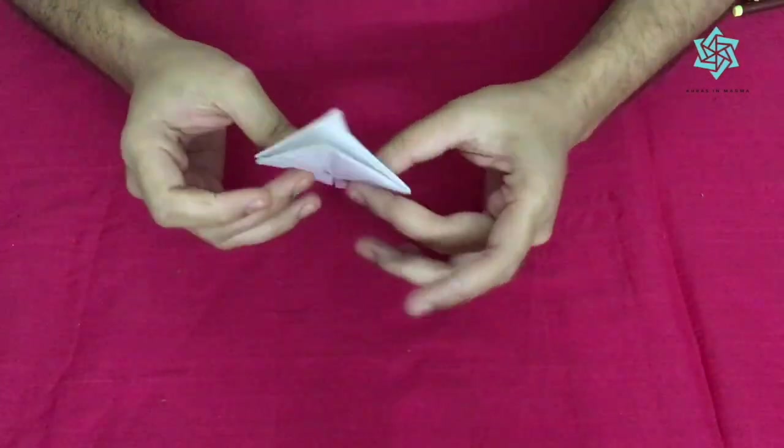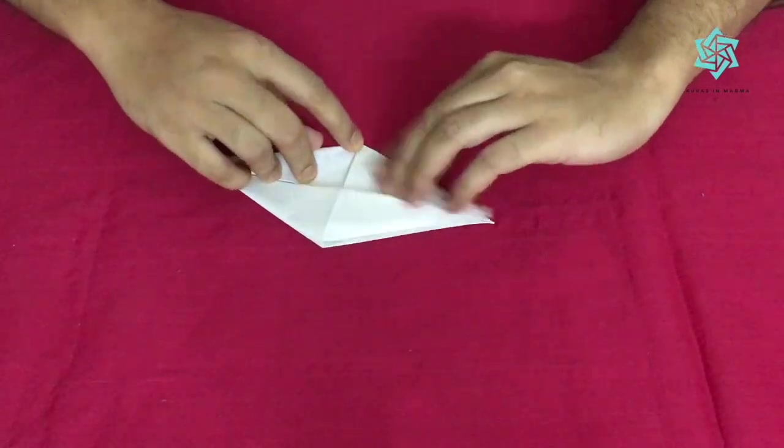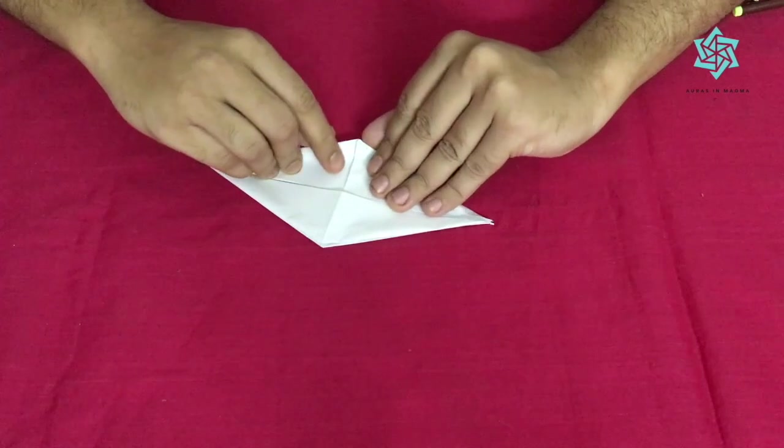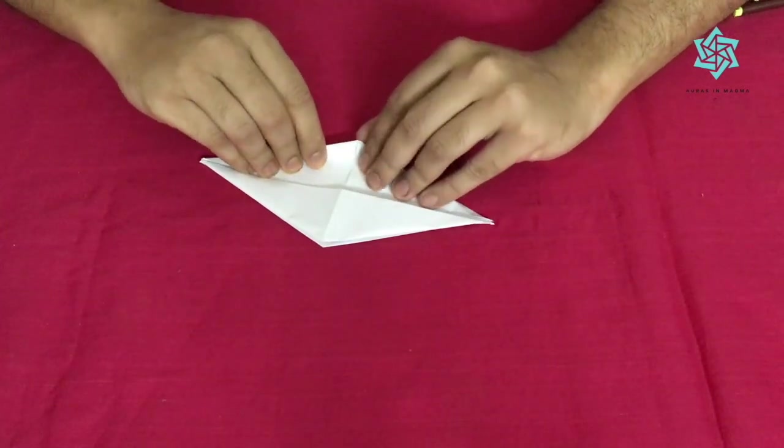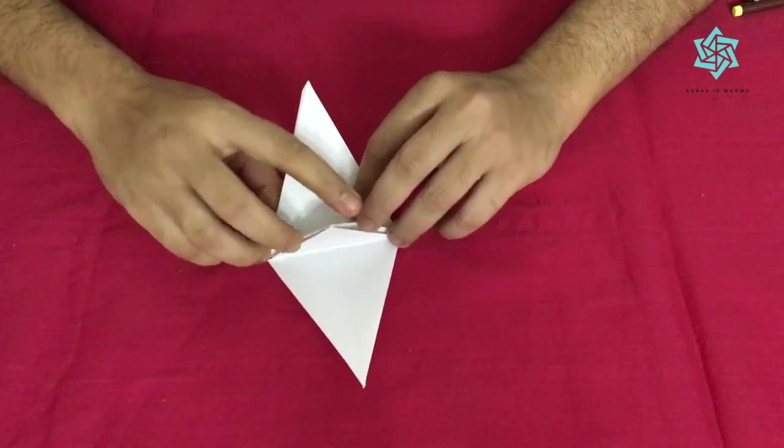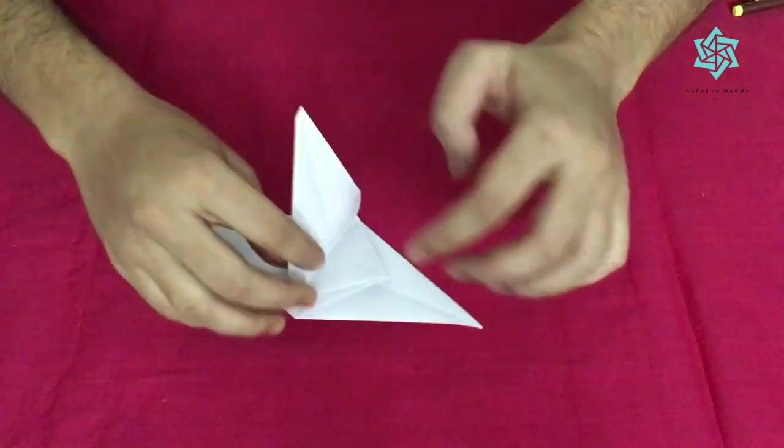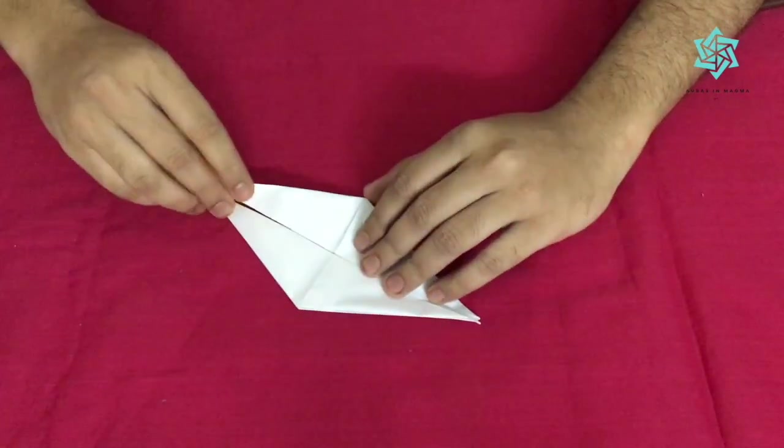This that we have gotten right now is called the bird base. Bird base can give us many things: crane, flappy bird. Today we are making a crane. Now you can see that this is the part which is pushed up and you can see this triangle on the top. This part which is pushed up, that is the top part. These two are the wings, this is the head, this is the tail.